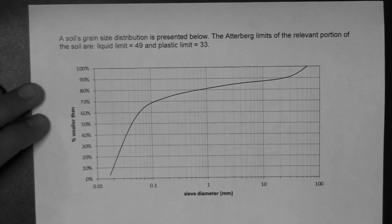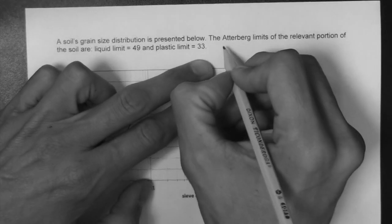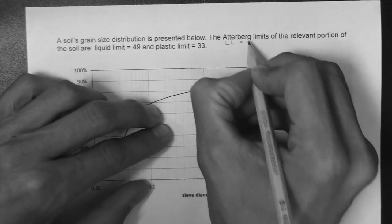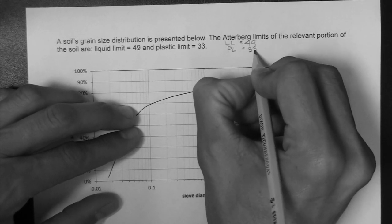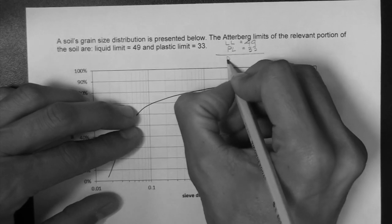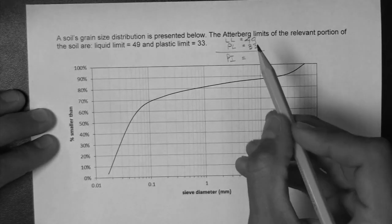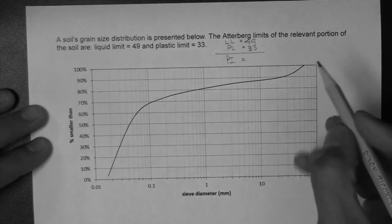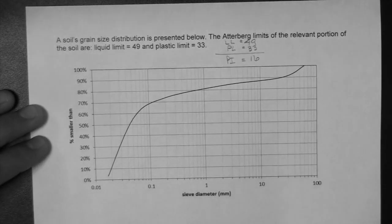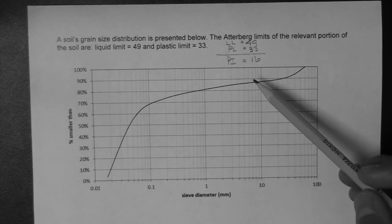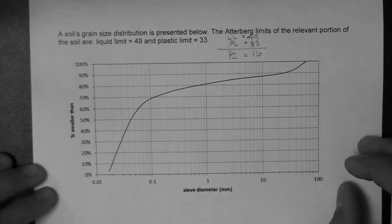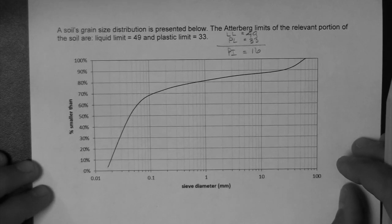What we're going to do first is realize that we can determine quickly the plasticity index, which is simply the liquid limit minus the plastic limit. This is 16. The plasticity index gives us an indication of the plasticity of the soil, that is the finer portion of the soil.